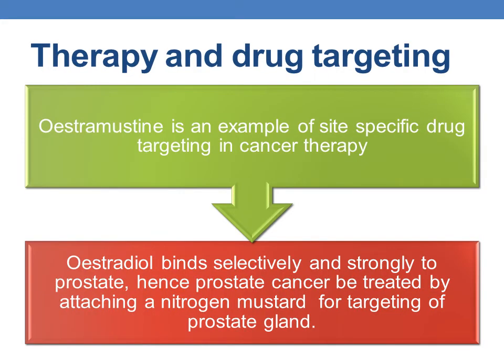Now coming to an example, estramustine is an example of site-specific drug targeting in cancer therapy. Estradiol has selectivity and binds selectively and strongly to the prostate gland. Hence, prostate cancer can be treated by attaching a nitrogen mustard for targeting the prostate gland.